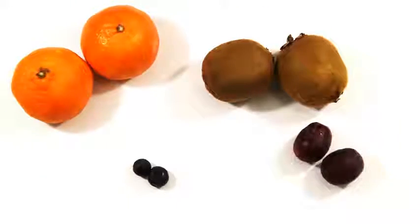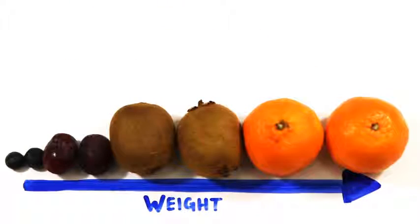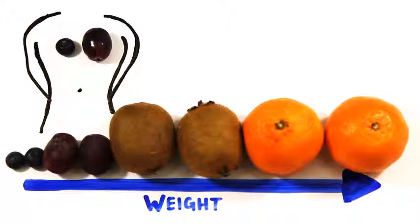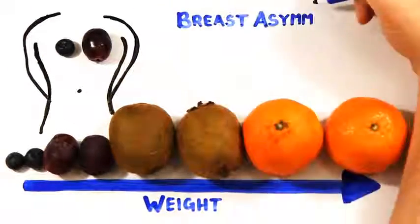Breasts come in all shapes and sizes, and though there is a positive correlation between breast size and weight, genes also play a crucial role in the size of boobs. 50% of the time, one breast is larger than the other, most commonly the left boob, known as breast asymmetry.